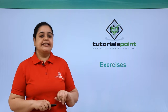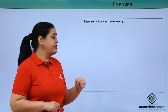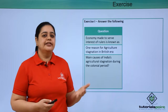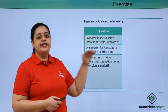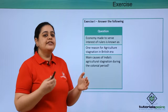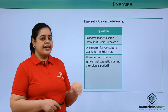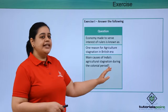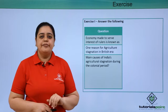Now let's do some exercises to test our knowledge. The first exercise is to answer the questions which have been given to us. You can read the questions, pause the video and write the answers, then cross-check if they're correct. The first question was: economy made to serve the interest of rulers is known as what? Then give one reason for agricultural stagnation in the British era. The third question asks for the main causes of India's agricultural stagnation during the colonial period.